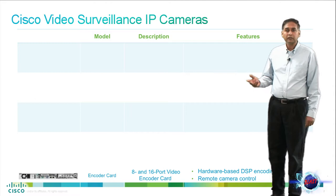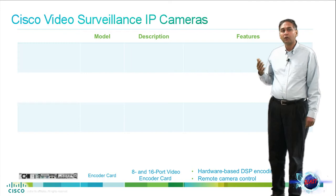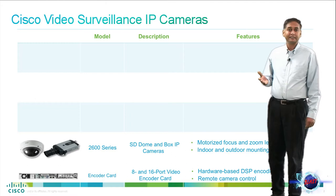The encoders are chassis-based and come in two variants: an 8-port version and a 16-port version. They're installed on the Cisco video encoding server, which then provides an all-in-one solution to encode, record and archive video.